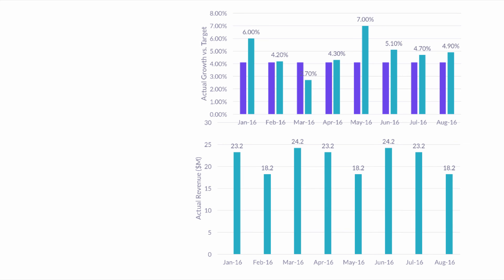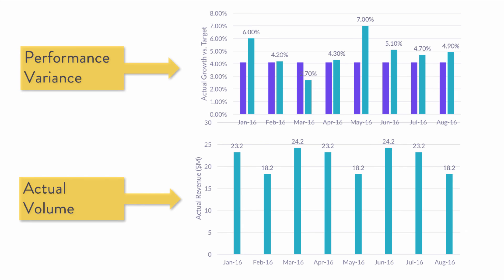Instead of having one bar chart with a dual-axis line chart overlaid, I've separated the chart into two pieces. Now we can see the actual volume at the bottom, and I've created an area where we can see the performance variance on top. I want to keep these areas a little bit separate so that the trends in each aren't interfering with the interpretation of each other.